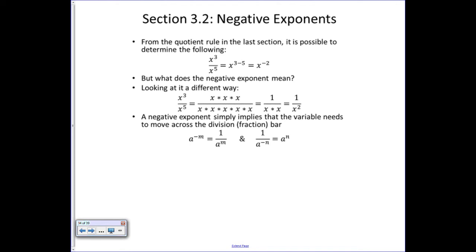Instead, let's look at the problem in a slightly different way. We have x cubed divided by x to the fifth — three x's in the numerator and five in the denominator. If we cancel out the ones that divide to one, x divided by x is one, and so on. What you're left with is one in the numerator and two x's in the denominator, or one over x squared. So x to the minus two is the same thing as one over x squared.